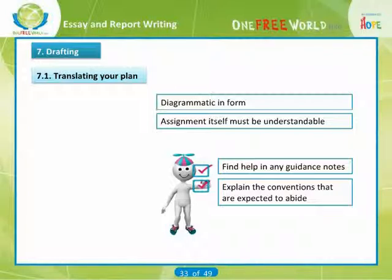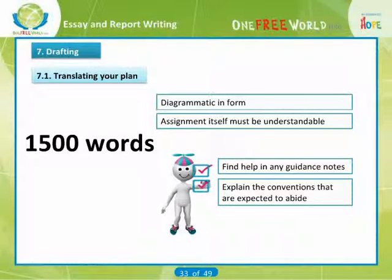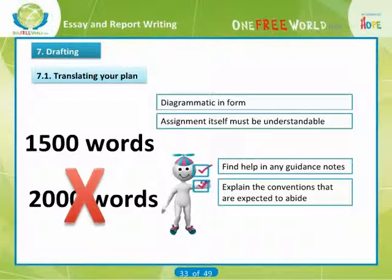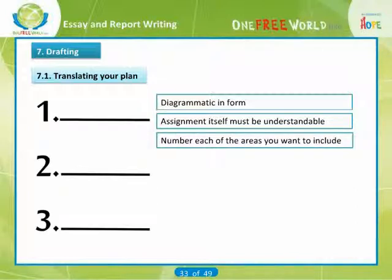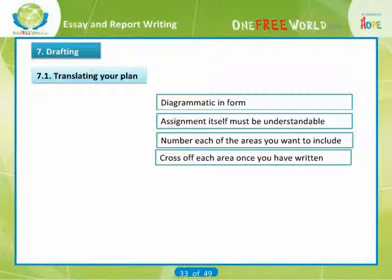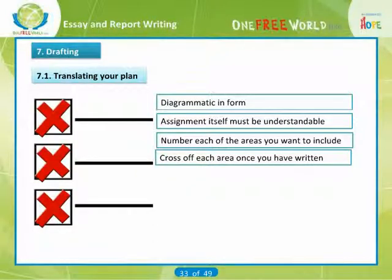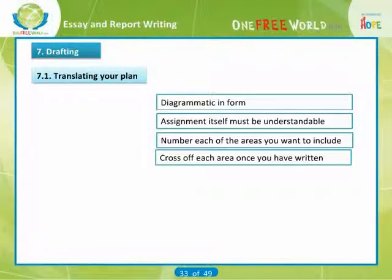For instance, if it asks for 1,500 words in continuous prose, it would not be a good idea to write 2,000 words and use subheadings. A useful way of converting your plan into a first draft is to number each of the areas you want to include — you may have already linked them with arrows. This confirms the order in which you want to present ideas and ensures a logical flow. Then cross off each area once you have written about it so there is no danger of repeating yourself. This can be encouraging by showing you how much progress you are making.